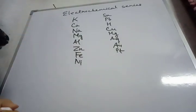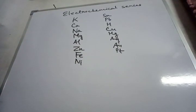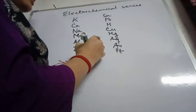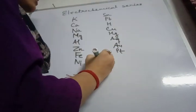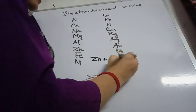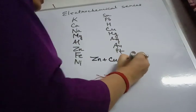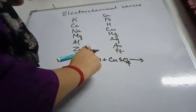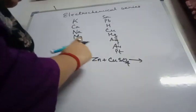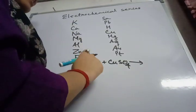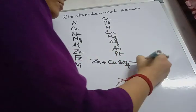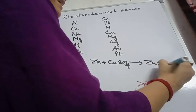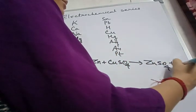A metal which is higher in the series can displace a metal lower in the series. For example, zinc plus copper sulfate — since zinc is present above copper in the electrochemical series, zinc can displace copper from copper sulfate, forming ZnSO₄ plus Cu.